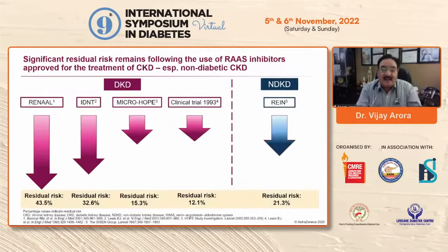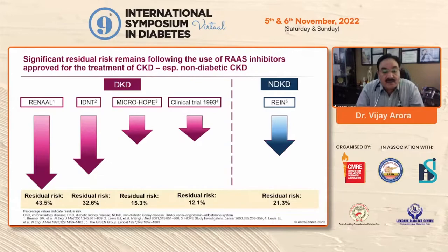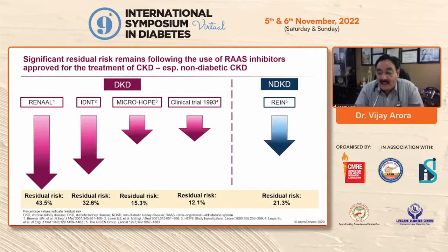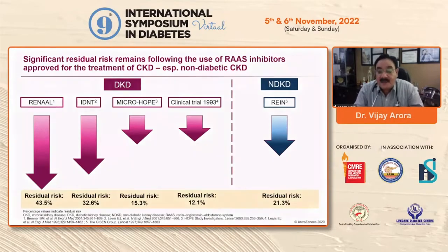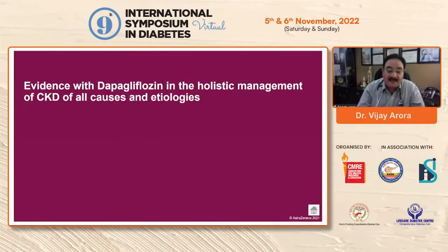Despite using RAS inhibitors in CKD patients, residual risk still remains. In the RENAAL study the residual risk was 43.5%, in the IDNT study it was 32.6%, in microHOPE it was 15.3%, and in the ONTARGET trial it was 12.1%. In patients with non-diabetic kidney disease in the REIN trial, residual risk is still 21.3%. So in spite of using RAS inhibitors at full dose, there is still risk of premature death.